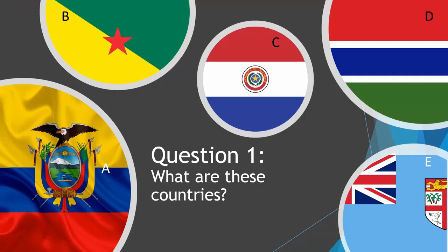So the first question is: which flags are these countries connected to? We have options A, B, C, D, and E.